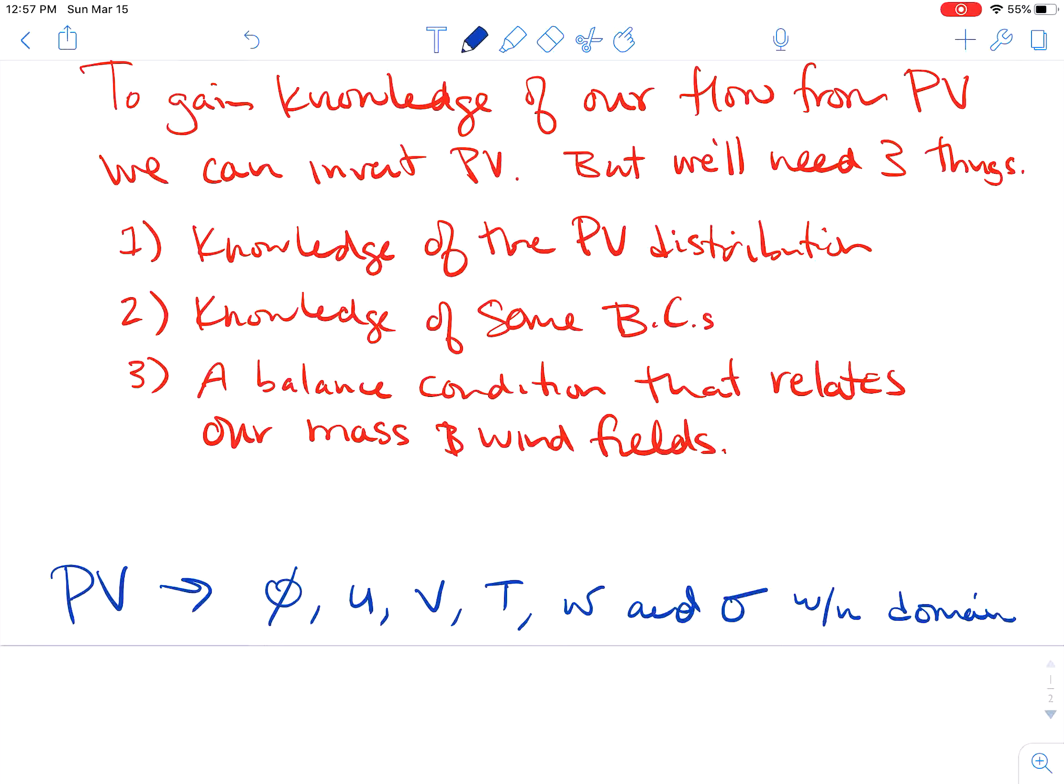That's why in the initial early numerical weather prediction that Rossby came up with, we basically were using PV as that forecast ability. But what we're really going to need to do to utilize this, while this PV invertibility is great, this is not a simple task to do and we will not be doing it in this class, but it can be done. What we want to do, though, is think more about how we can use knowledge of the PV at any given point in time to understand the structure of the atmosphere.